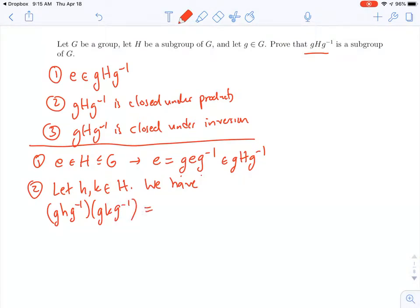Now when I multiply these together, I can reassociate, and I'll get gh, and now I'll associate the g inverse and the g in the middle together, and they're going to turn into an e, which will then disappear, and so I get ghk in the middle g inverse.